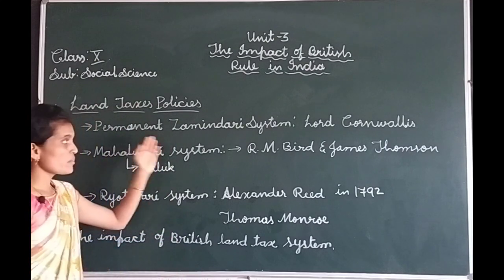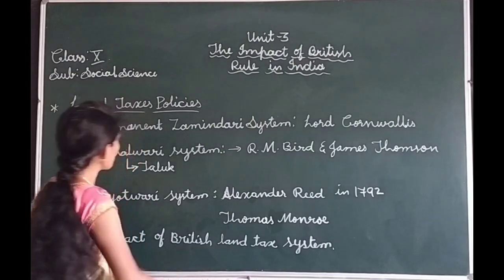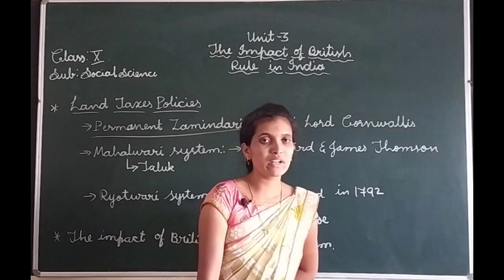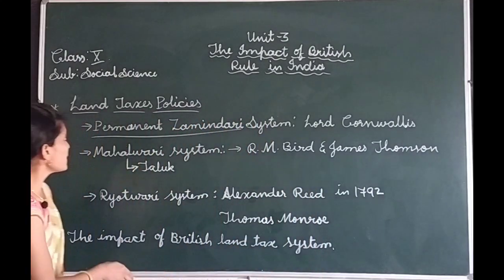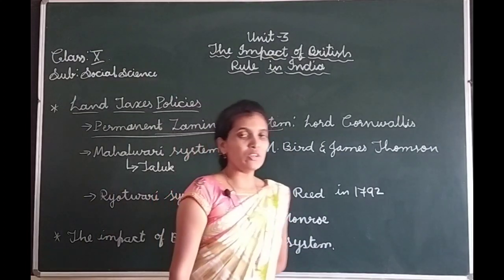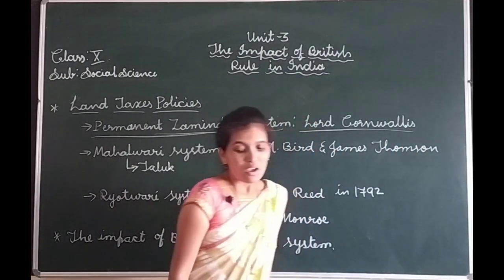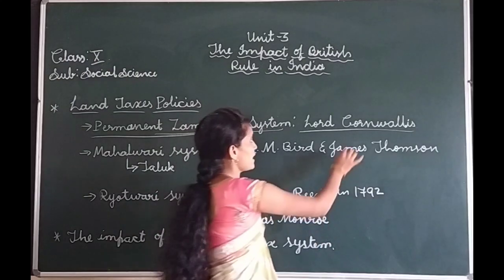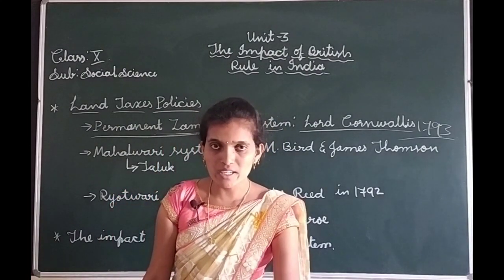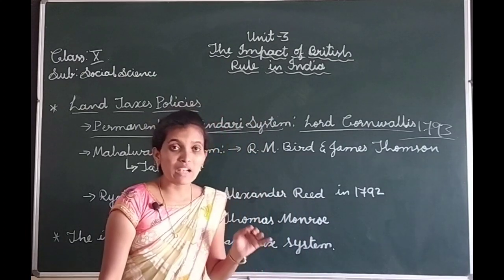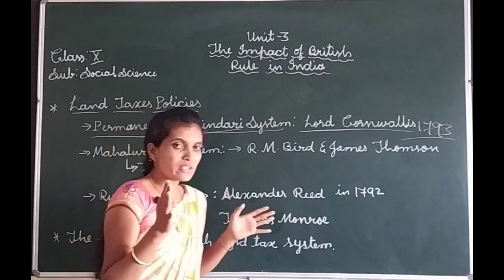The Permanent Zamindari System was introduced by Lord Cornwallis in the year 1793 in the regions of Bengal and Bihar. Let us discuss the concept about the Permanent Zamindari System — who introduced it and what it was about. According to this system, Zamindars were like mediators between the British East India Company and the Indian farmers.